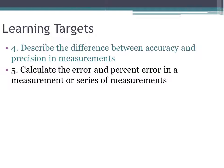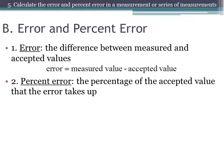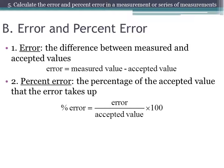So we've described the difference between accuracy and precision. There is a quantitative aspect to accuracy, and that's calculating error and percent error. When we talk about the error in a measurement, it's simply the difference between the measured and the accepted values: error equals your measured value minus the accepted value. The percent error is the percentage that the error takes up, and the equation is: percent error equals error divided by the accepted value times 100.